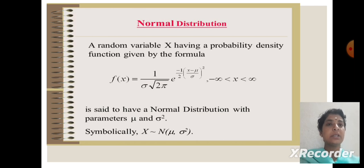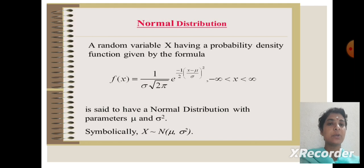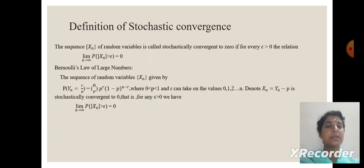Normal distribution: a random variable x having probability density function given by f of x equal to 1 by root 2 pi sigma into e power minus 1 by 2 times x minus mu divided by sigma, whole squared, is said to have a normal distribution with parameters mu and sigma squared.